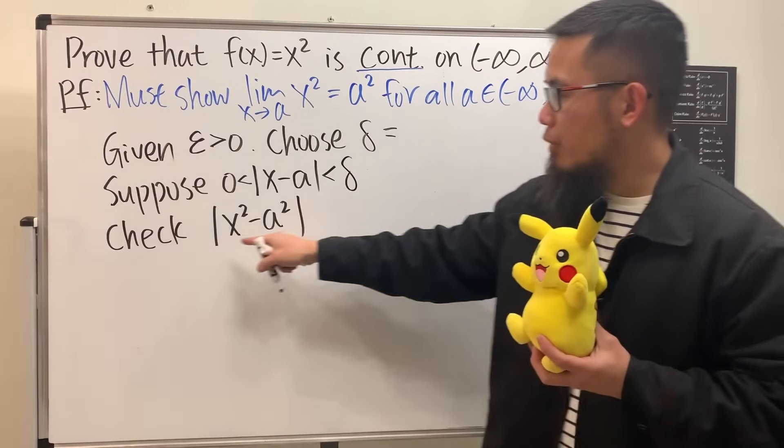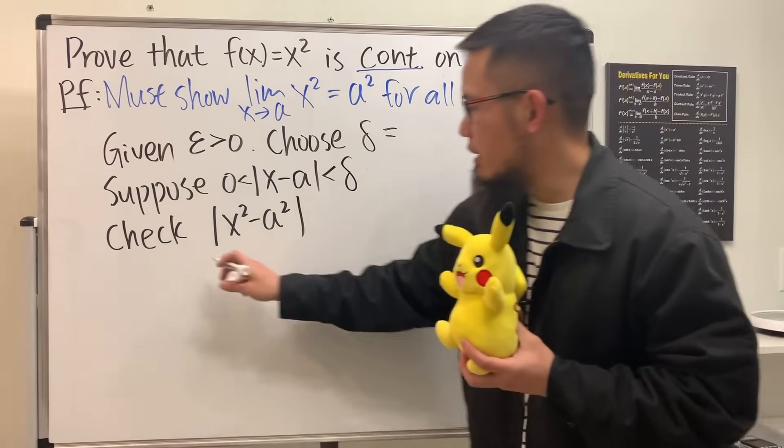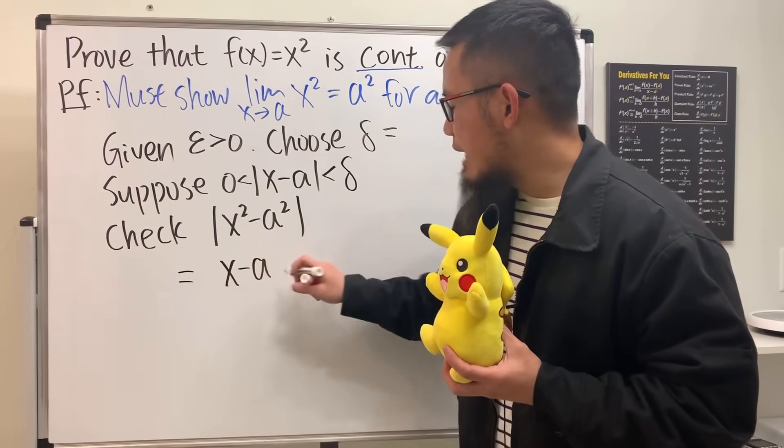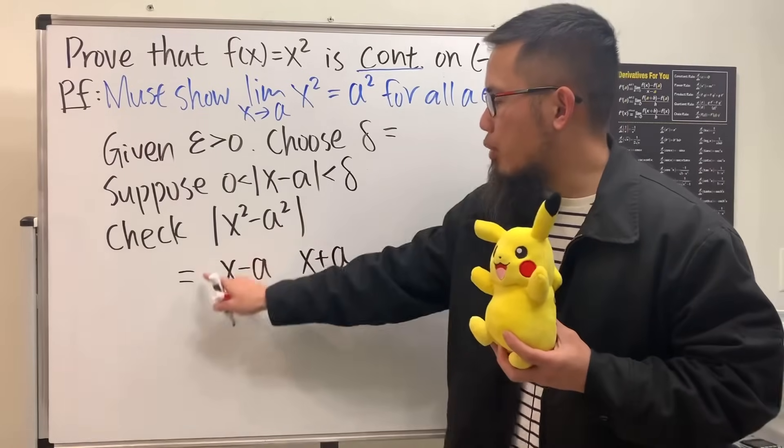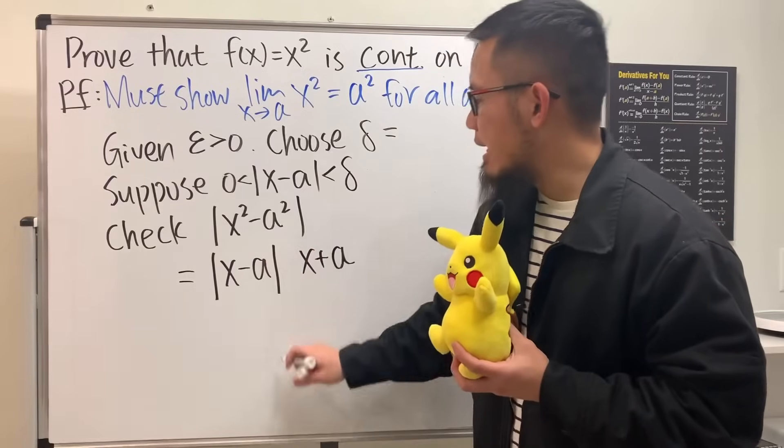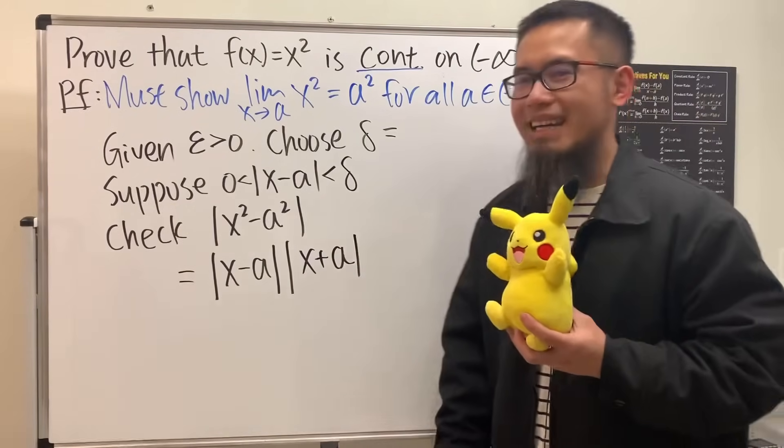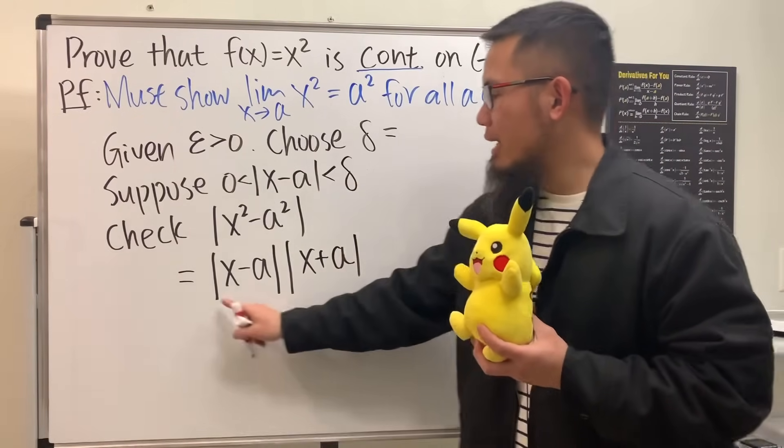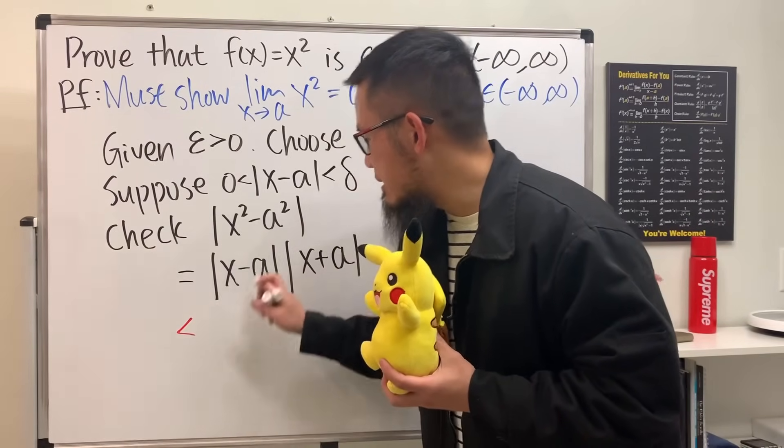And now look at this. Can we do algebra? Yes, so we will do algebra for this. This right here we can factor it. We get x minus a times x plus a. And now here's the deal: the absolute value of a product is the same as the product of the absolute value, so we can just say absolute value of x minus a times x plus a in the absolute value like that. Have a look, we have x minus a is less than delta, and that's exactly what we have right here. So we can replace this part and say this is less than delta.